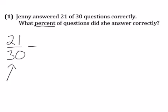I look at 21 and 30. I see they're both divisible by 3. 21 divided by 3 is 7. 30 divided by 3 is 10.